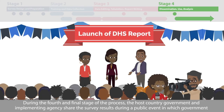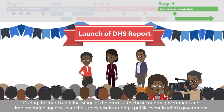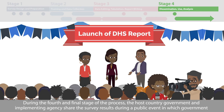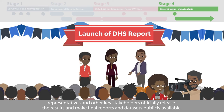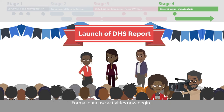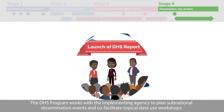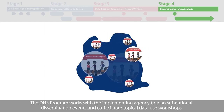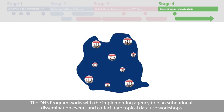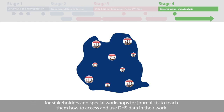During the fourth and final stage of the process, the host country government and implementing agency share the survey results during a public event in which government representatives and other key stakeholders officially release the results and make final reports and data sets publicly available. The DHS program works with the implementing agency to plan subnational dissemination events and co-facilitate topical data use workshops for stakeholders and special workshops for journalists to teach them how to access and use DHS data in their work.